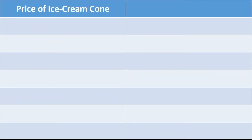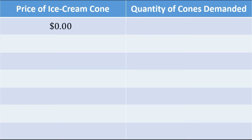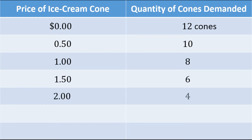On one side we have taken price of ice cream cone, and on the other side we have taken quantity of cones demanded. Suppose if the price of ice cream cone is $0, then the consumer will demand 12 cones. As the price increased to $0.50, quantity of cones demanded reduced to 10 cones. As the price increases further, quantity of cones demanded reduces. And when the price of ice cream cone reaches $3, quantity of cones demanded becomes 0 — the consumer does not buy any ice cream at all at a price of $3.